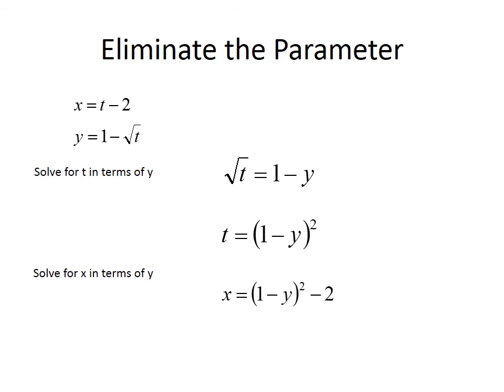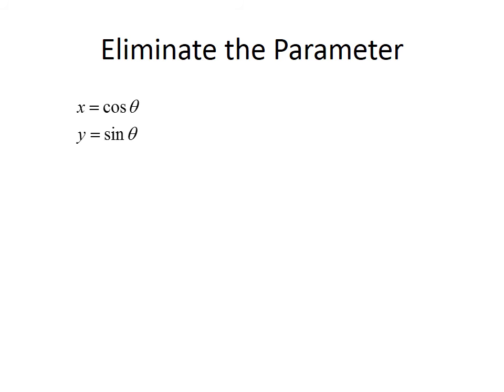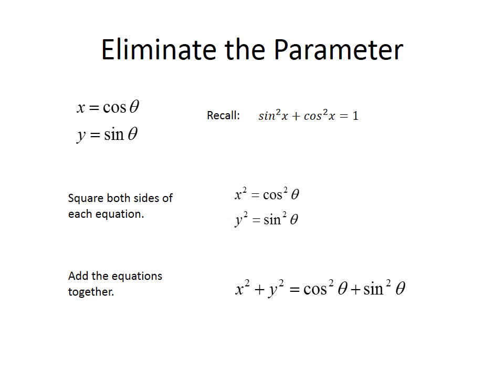Again, you can graph this on your calculator to be sure what it would look like. The last one, most students missed this one. What we have to do for this is we have to use a concept from pre-calculus, an identity, sine squared x plus cosine squared x equals 1. And so what I'm going to do is I'm going to square both sides. Then I'm going to add the two equations together. And then I'm going to replace cosine squared plus sine squared with 1. And I get x squared plus y squared equals 1, which is a circle with center of 0 and a radius of 1.